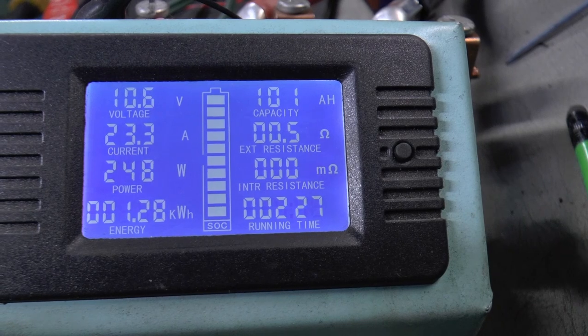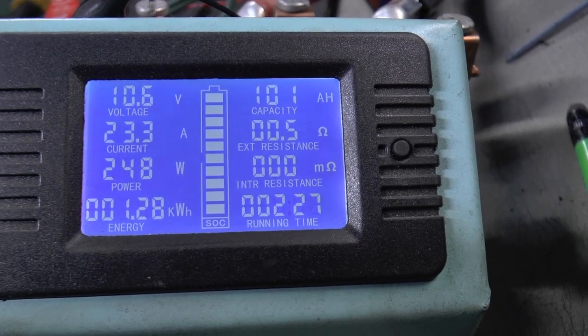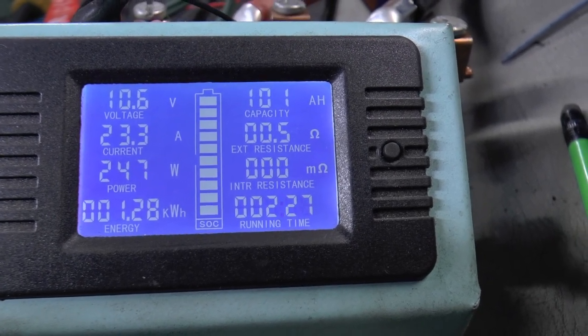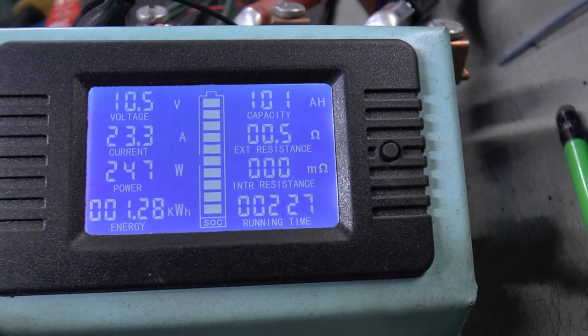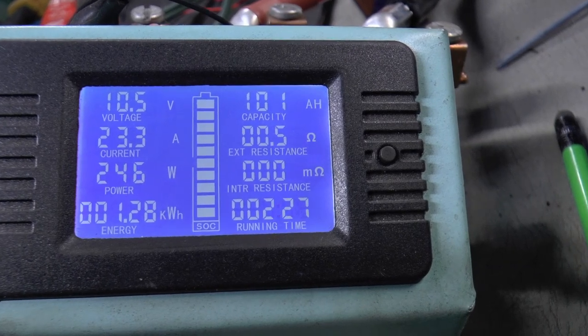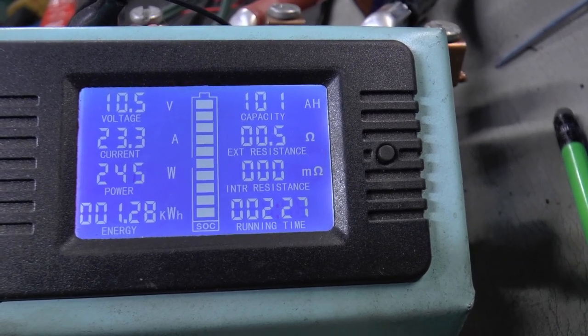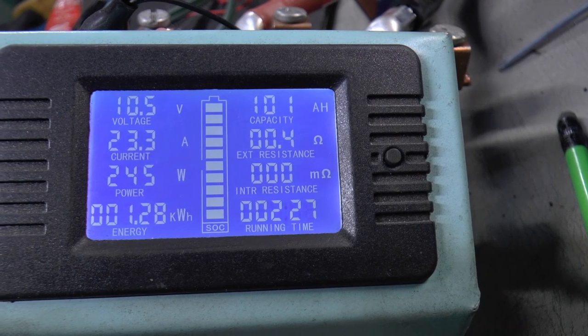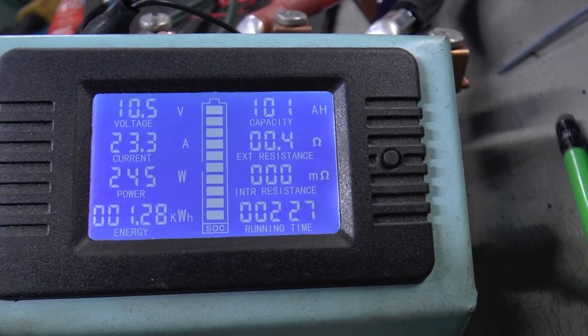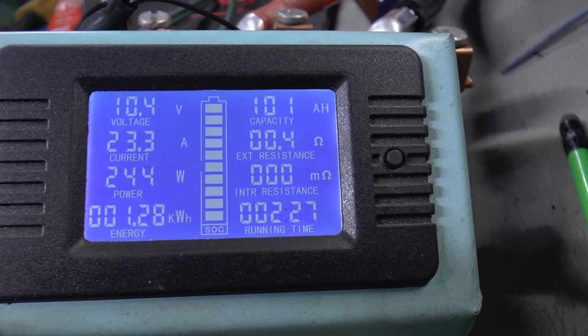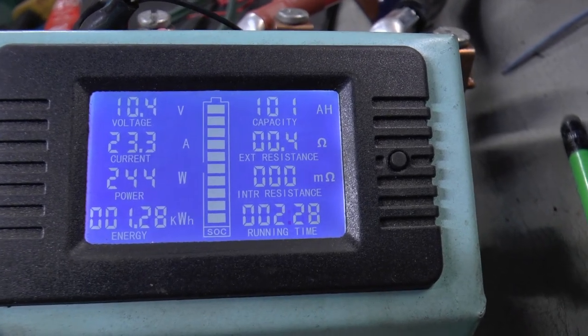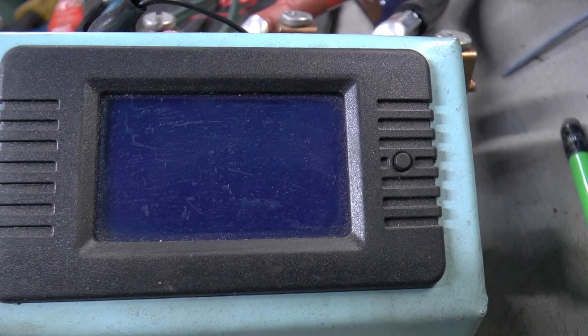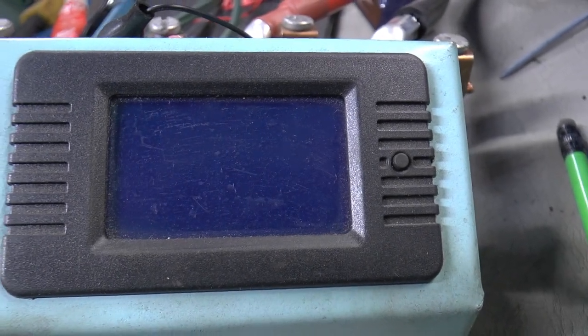I guess I called it, huh? Now we're up to 1,280 watt hours. Now the other one, the BMS on my battery shut off before the inverter did. So let's see what this one does. 10.4 volts. And this one did the same. All right.